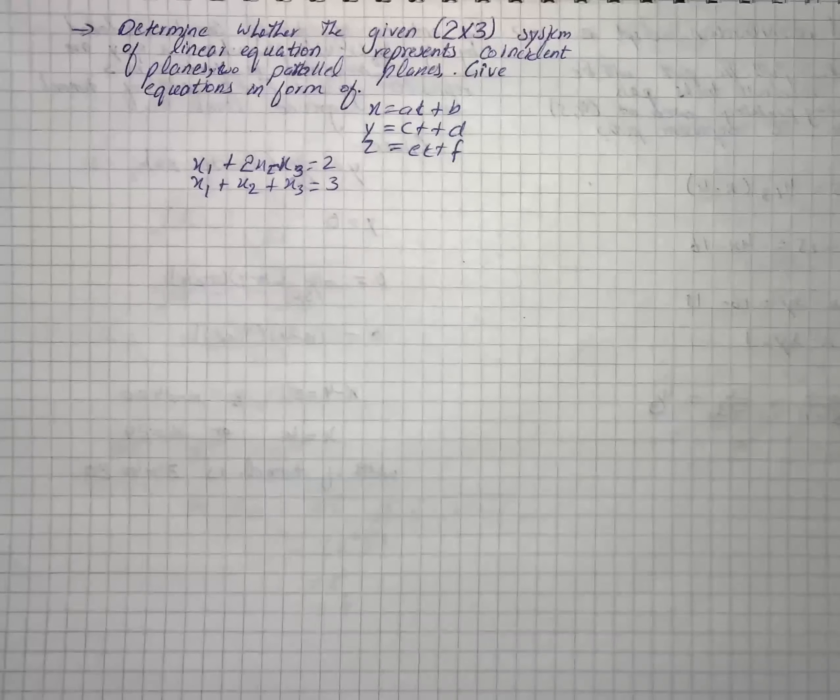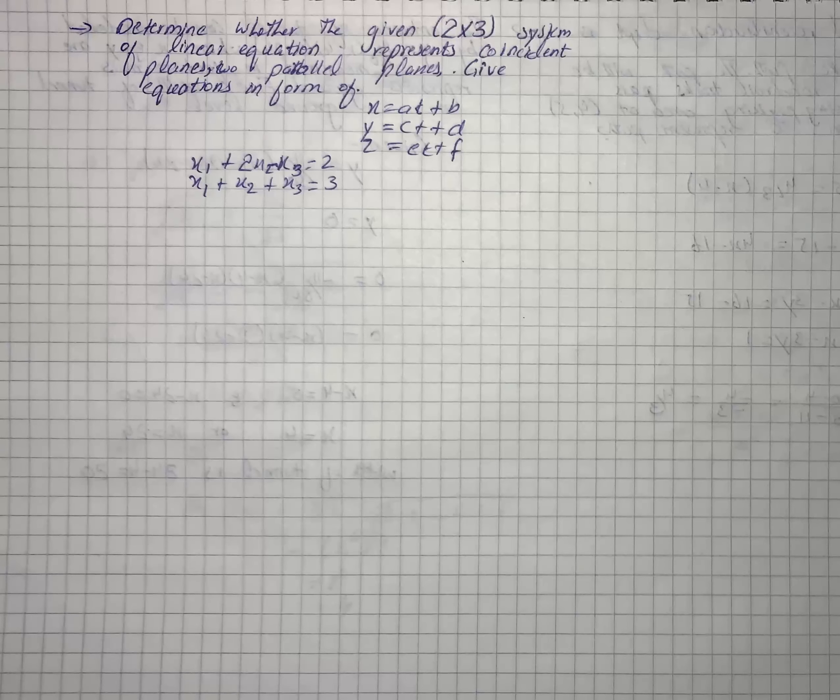Here we have a question that says determine whether the given 2×3 system of linear equations represents coincident planes, 2 parallel planes, or 2 planes whose intersection is a line.